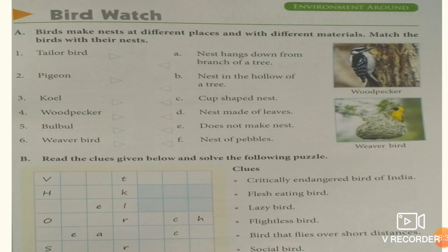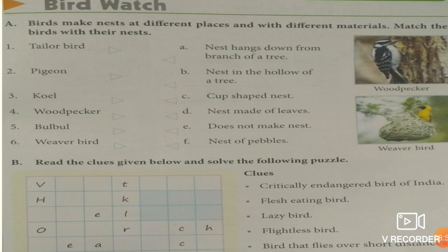The first one is the tailor bird — nest made of leaves — answer is D. Second one is pigeon — nest of pebbles. Third one is koel — answer E, does not make a nest.